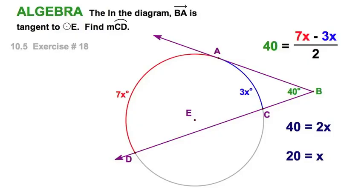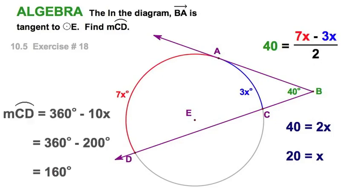However, let's go back and read the question. It doesn't say how much is x. Find the measure of CD. I think the easiest thing to do would be to say, I've got 7x there and 3x there. That would be a total of 10x. Let's take 360 degrees full circle, take away 10x, and that would leave me with 160. So, my arc, the gray arc down here, CD is 160 degrees.